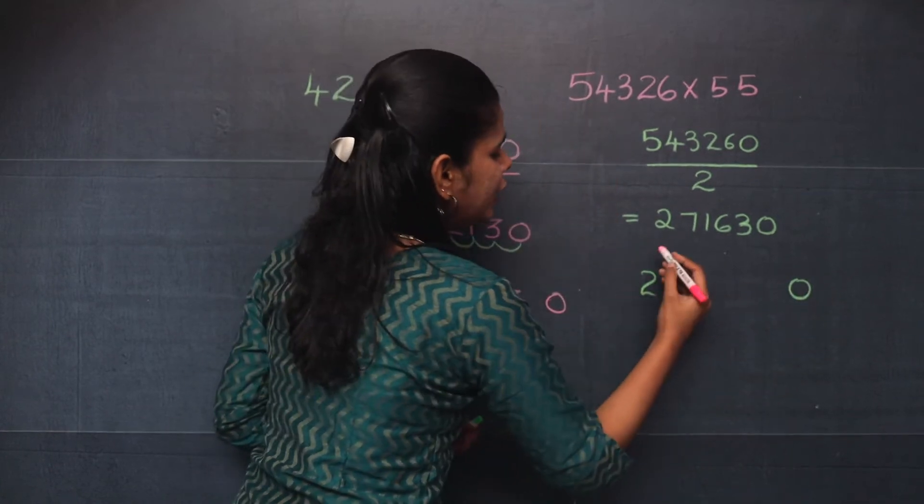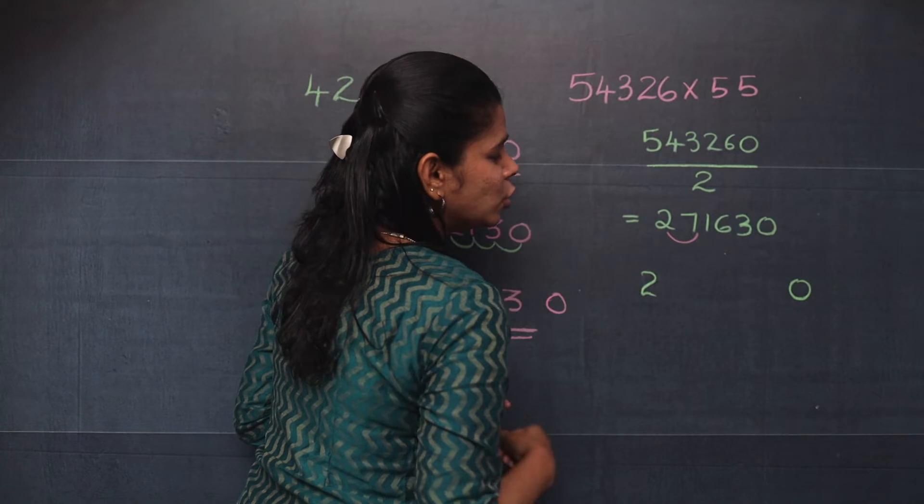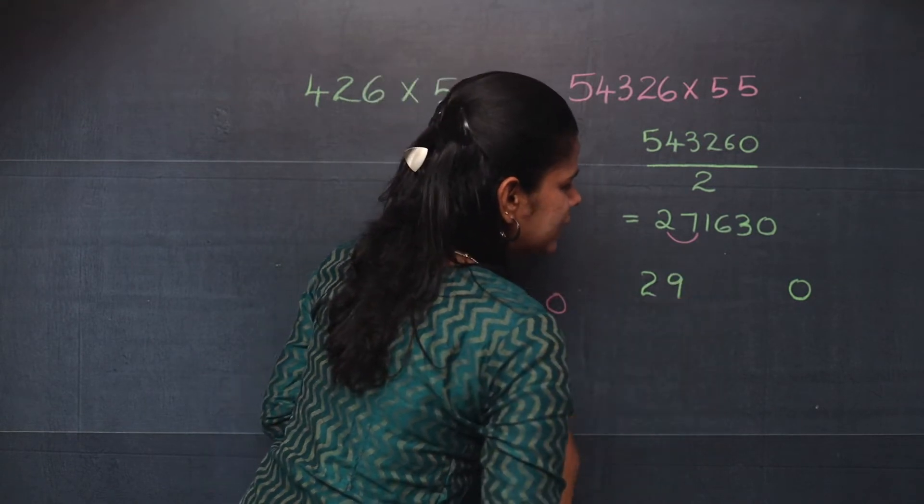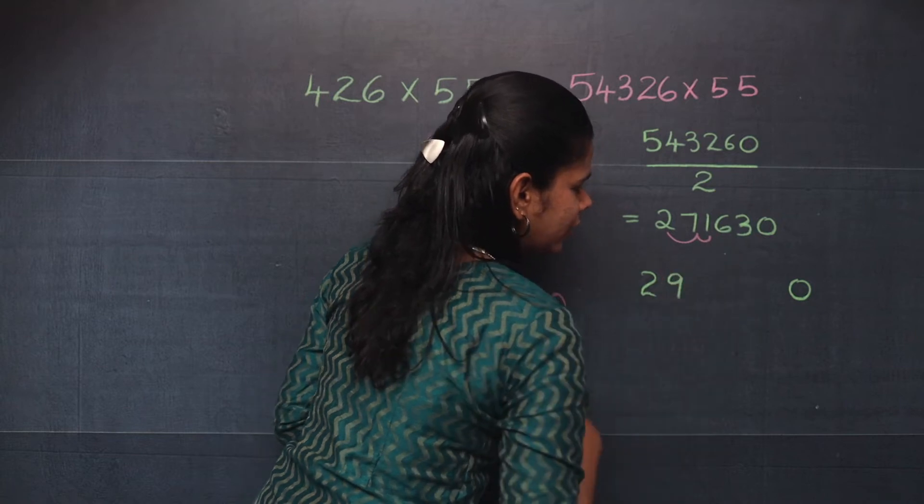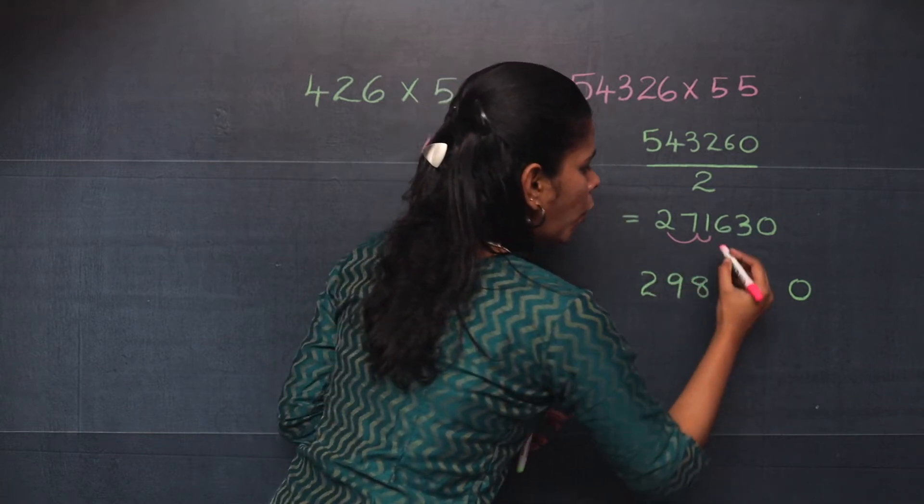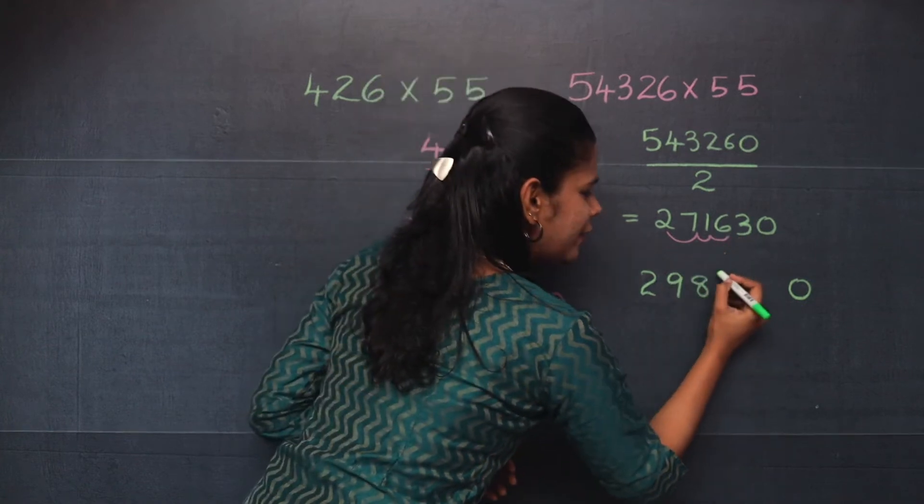Now you will add 2 and 7. 2 plus 7 is 9. Now 7 plus 1, it is 8. And 1 plus 6, it is 7.